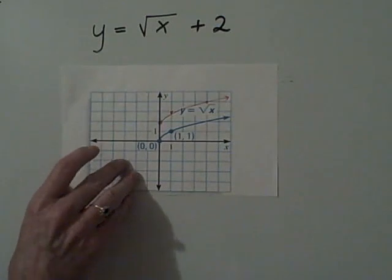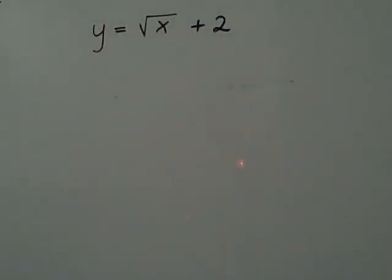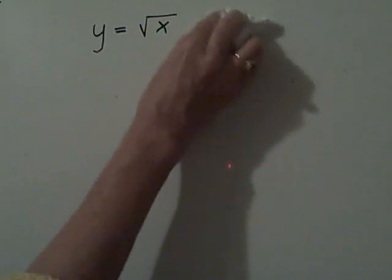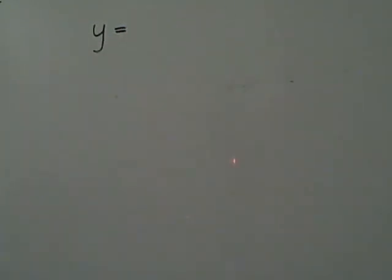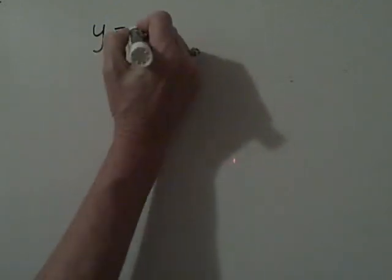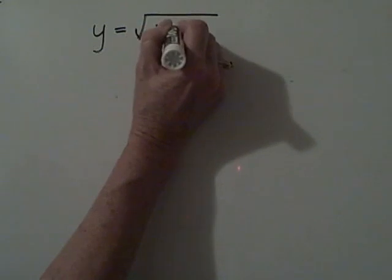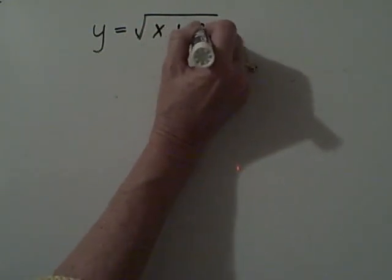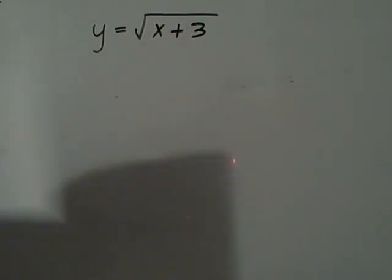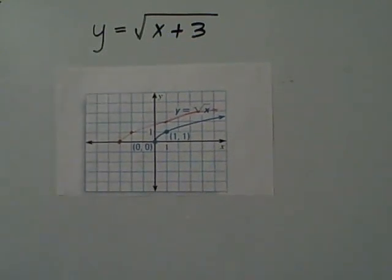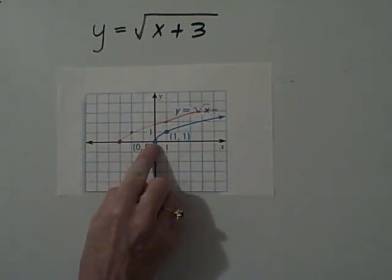Let's take a look at another one. What if instead of putting the plus 2 on the outside of the radical, we took and instead we put a plus 3 on the inside of the radical: the square root of x plus 3. This is what the graph of the equation looks like. Notice what happens is that each one shifts over three spaces.